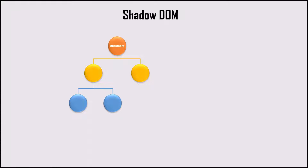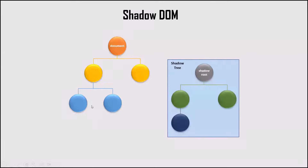Let's say this is our document tree, where these nodes are the different elements available in the document. Now using Shadow DOM, we can attach hidden DOM trees to the original DOM structure. Here this is our original DOM tree, and all these styles and elements available at any location can be accessed in this document. Now if you want to hide a part of code from the original tree, then we can add that part using the Shadow DOM.